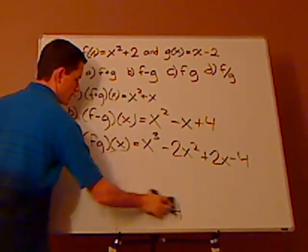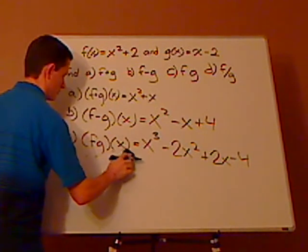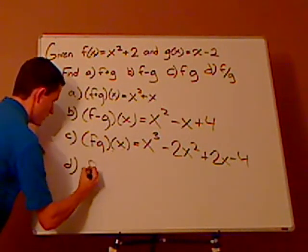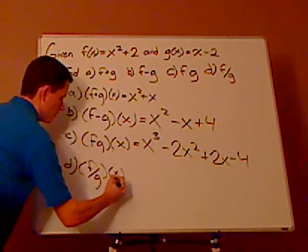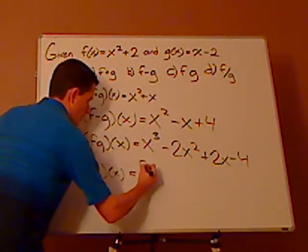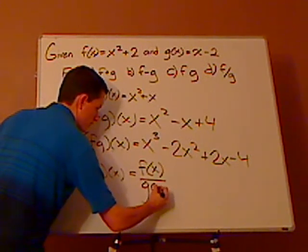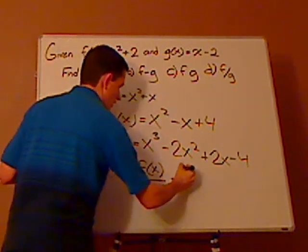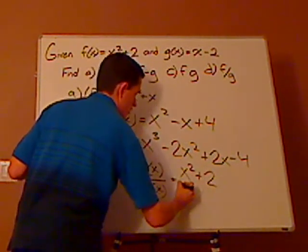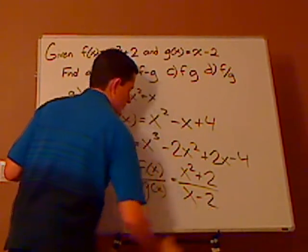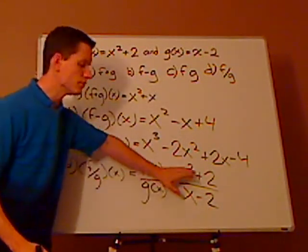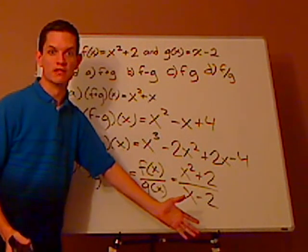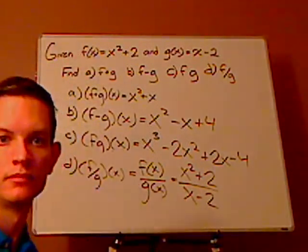The last one is dividing. For part d, f over g of x — you're dividing, so you just do substitution. You get x squared plus 2 over x minus 2, and that's it. If you're able to simplify it you would want to, but here you can't simplify it, so you just leave it as is.